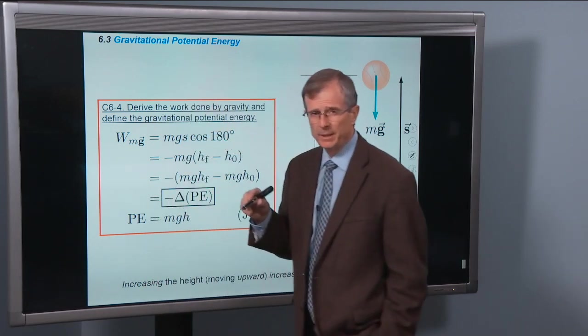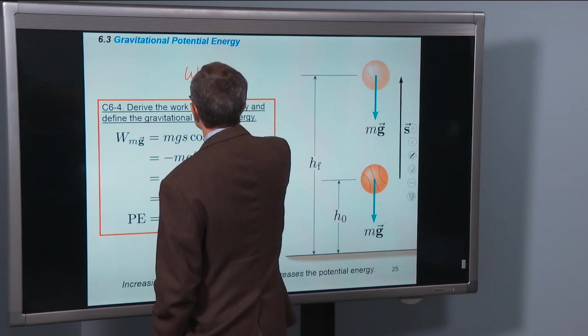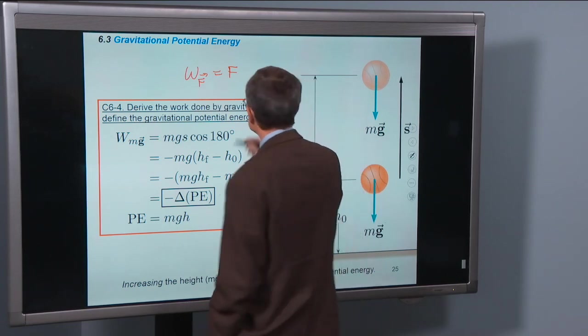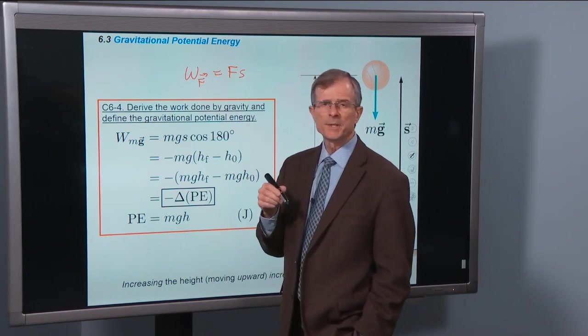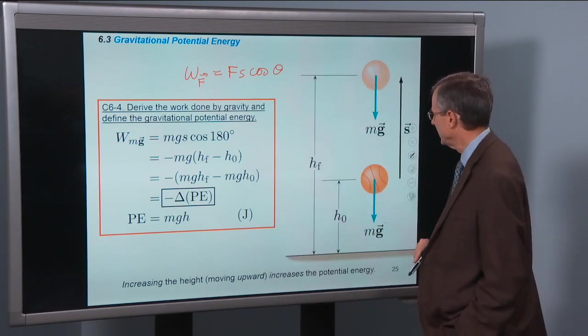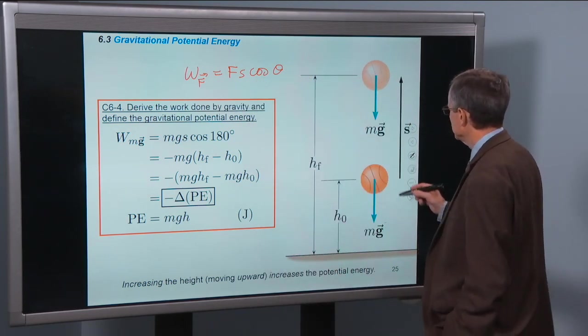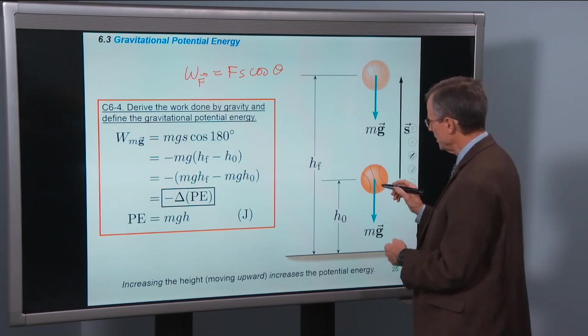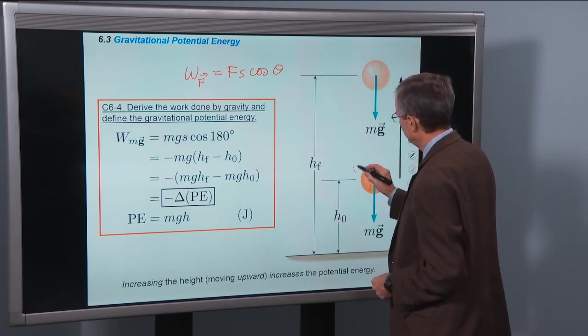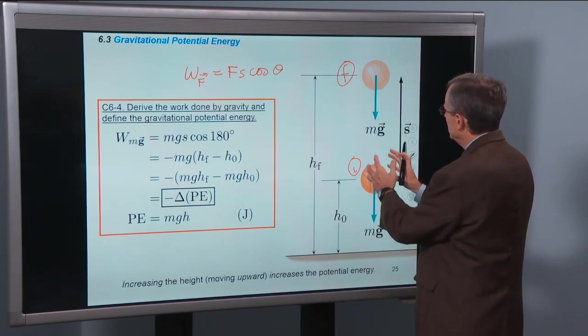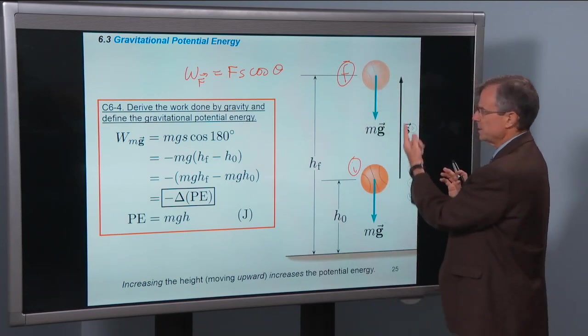Alright, our first step is to define the work done, derive the work done by gravity. Well the work done by gravity, work done by any force, by some particular force, is the magnitude of that force times the magnitude of the displacement, meaning the distance, times the cosine of the angle in between. Let's apply it to gravity. And let's do it in this particular case. I'm going to take a baseball and I'm going to displace it vertically.